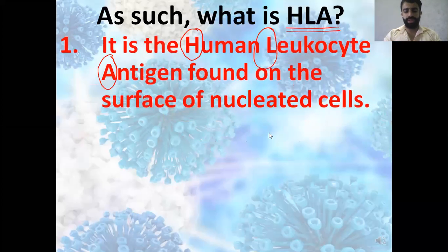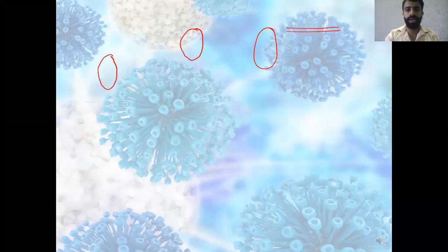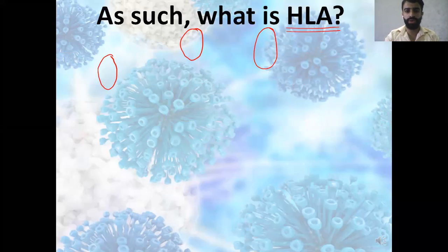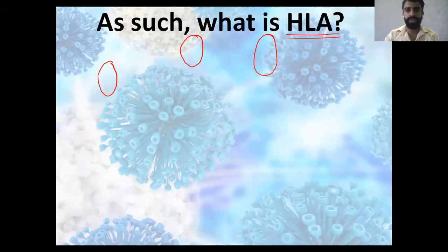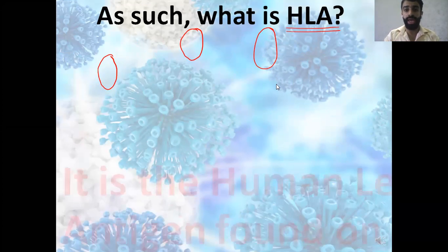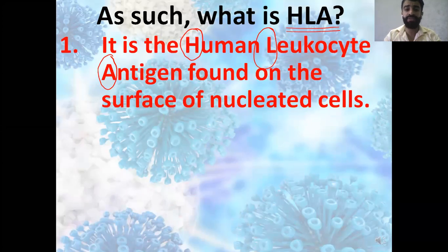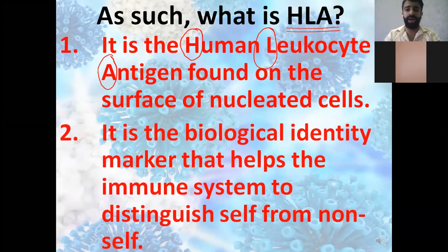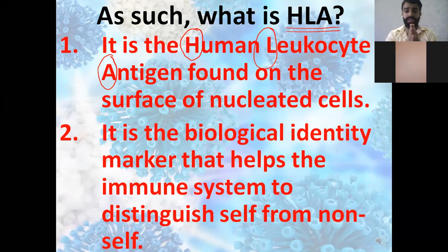To study about the immune system, we have to know what HLA is. HLA is known as the human leukocyte antigen, found on the surface of nucleated cells. HLA is the biological identity marker — it's the one that determines what is self and what is non-self, and it helps the immune system distinguish between the two.